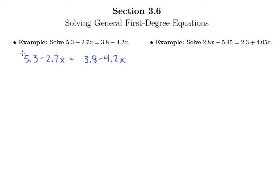And so just like we multiplied by the least common denominator when we were eliminating fractions, we're going to multiply by 10 in this problem. Because we know that when we distribute 10 through to each term, that's going to have the effect of moving the decimal point to the right one place in each number. So what we end up with is 53 minus 27x equals 38 minus 42x.